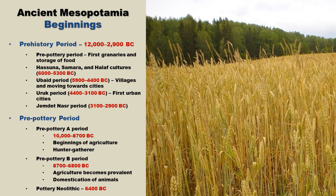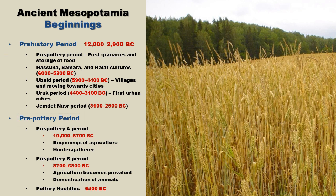Mesopotamian prehistory mostly occurred in the Neolithic period, which is the final division of the Stone Age. The earliest era in Mesopotamian prehistory is the Pre-Pottery period — a time before pottery was invented in this region. The Pre-Pottery period can be divided into two main subdivisions: the Pre-Pottery A period, lasting from around 10,000 to 8,700 BC, and the Pre-Pottery B period, lasting from around 8,700 to 6,800 BC.